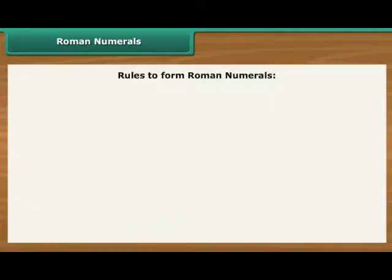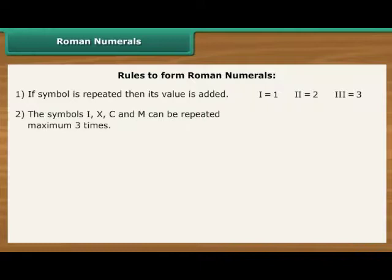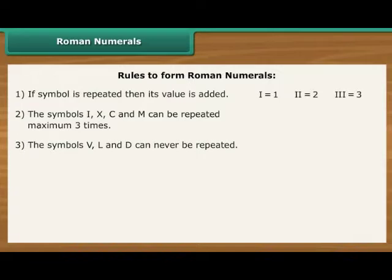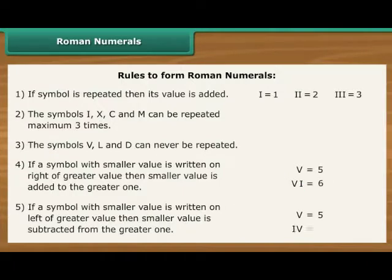There are certain rules to form Roman numerals. If symbol is repeated then its value is added. The symbols I, X, C and M can be repeated maximum three times. The symbols V, L and D can never be repeated. If a symbol with smaller value is written on right of greater value then smaller value is added to the greater one. If a symbol with smaller value is written on left of greater value then smaller value is subtracted from the greater one.